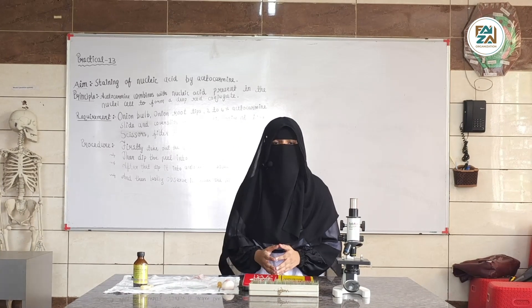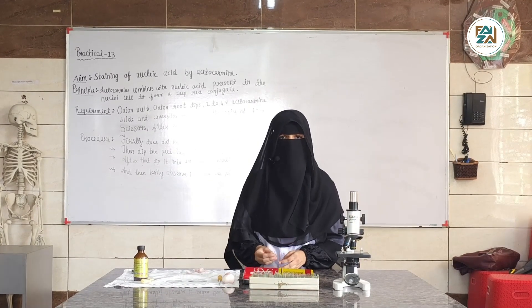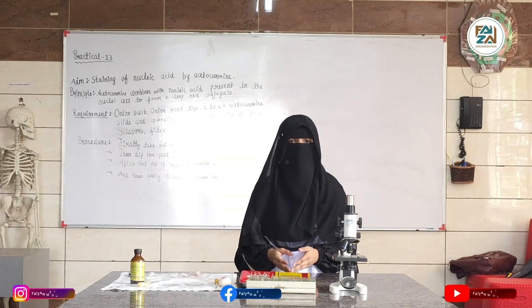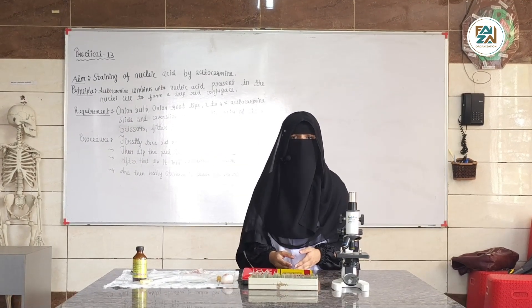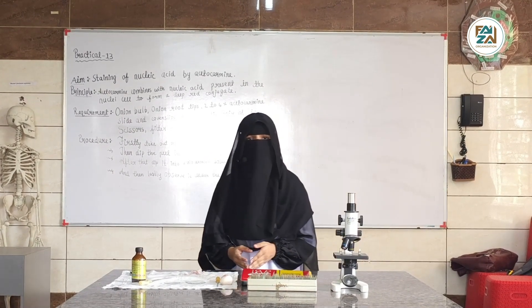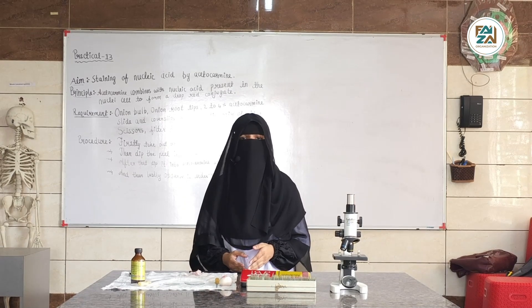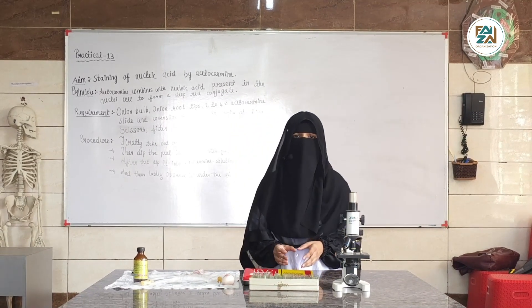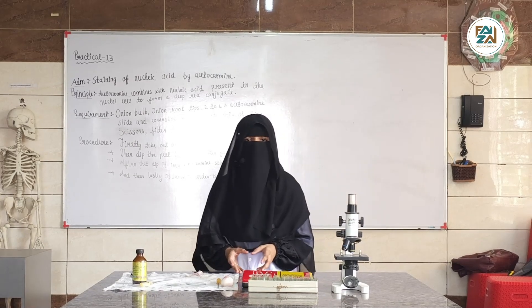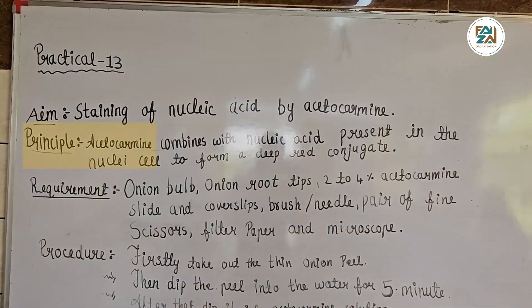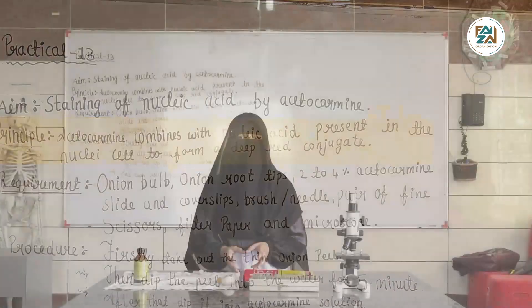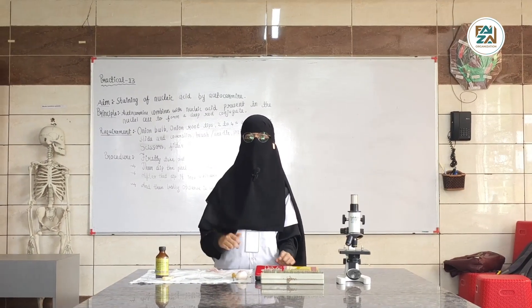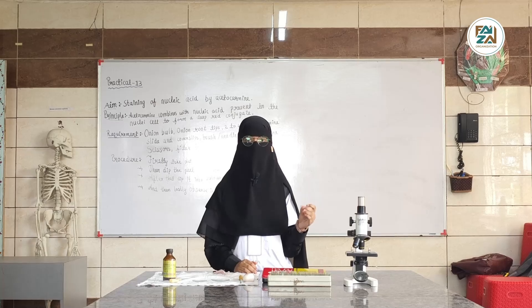We are going to perform the practical of staining the nucleic acid present in the onion peel cell by using aceto carmine reagent. The aim of our practical is to stain the nucleic acid present inside the onion peel cell. The principle is that the aceto carmine reacts with the nucleic acid present inside the onion peel cell and gives a red colored conjugate.